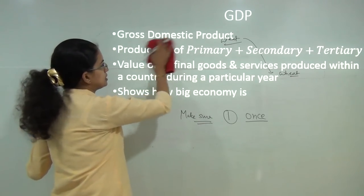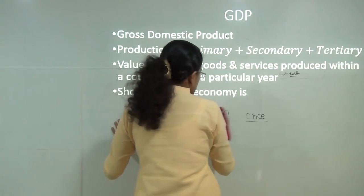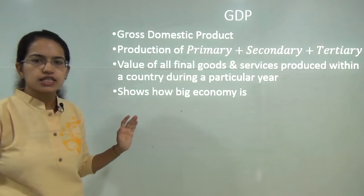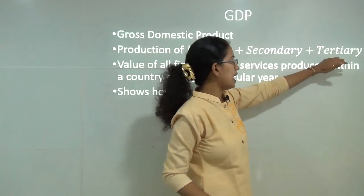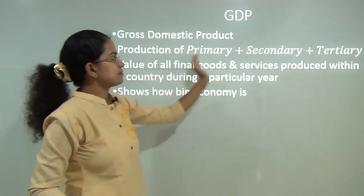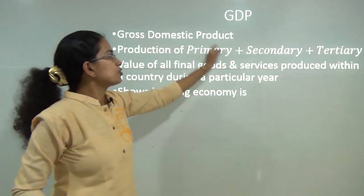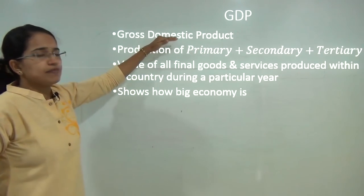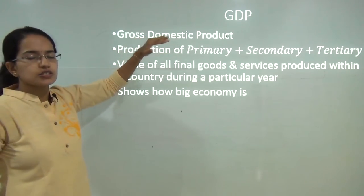Let's talk about what is GDP or Gross Domestic Product. Gross Domestic Product is the summation of the production that runs through primary activities, secondary activities, as well as tertiary activities. The value of all these final goods from all three sectors would come towards the Gross Domestic Product.